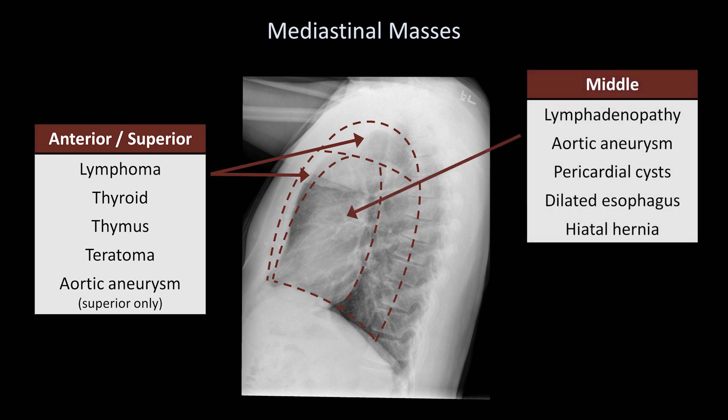The middle mediastinum includes everything within the pericardium, and is variably defined to also include the subcarinal, paratracheal, and hilar lymph nodes, and the esophagus. The differential diagnosis of masses here includes lymphadenopathy from any cause, an aortic aneurysm, pericardial cyst, dilated esophagus, or a hiatal hernia.